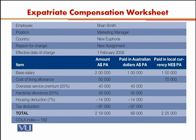The total base salary being paid to Brian Smith is 200,000 Australian dollars per annum. The cost of living allowance being paid is 50,000. But according to the COLA index of 150, the cost of living allowance will be paid in local currency, and that amounts to 75,000 dollars.